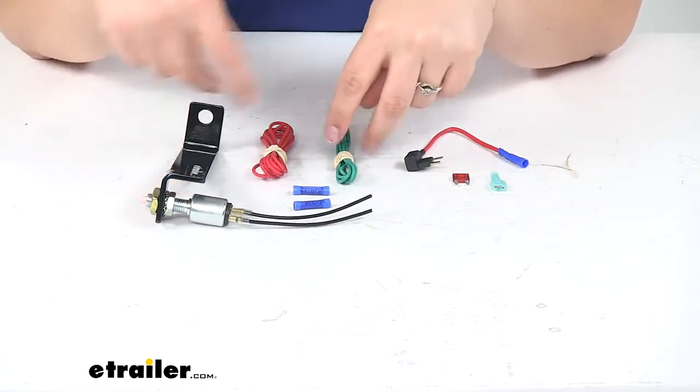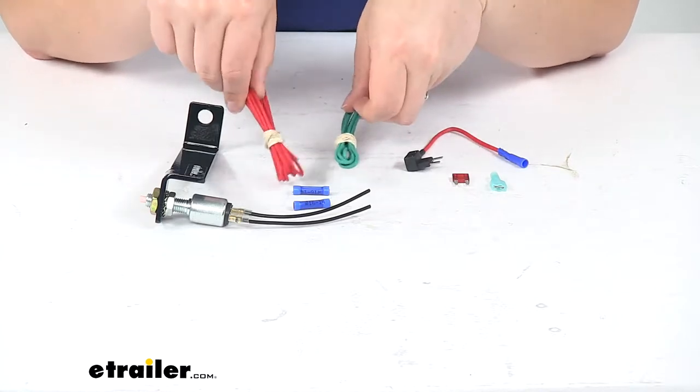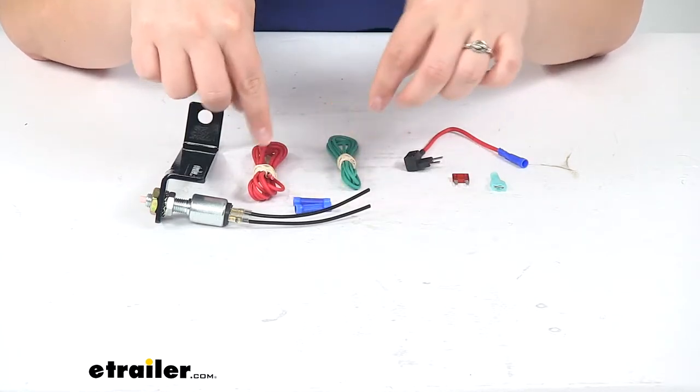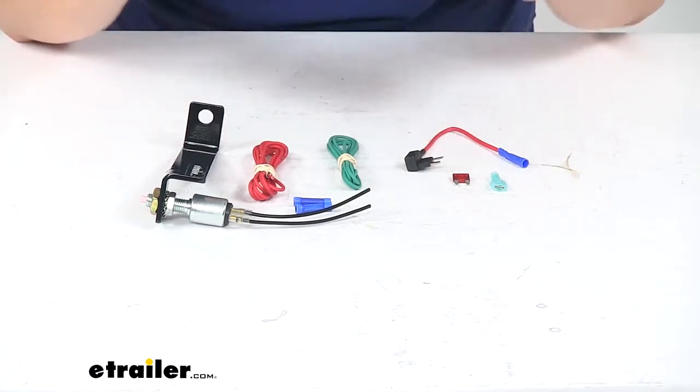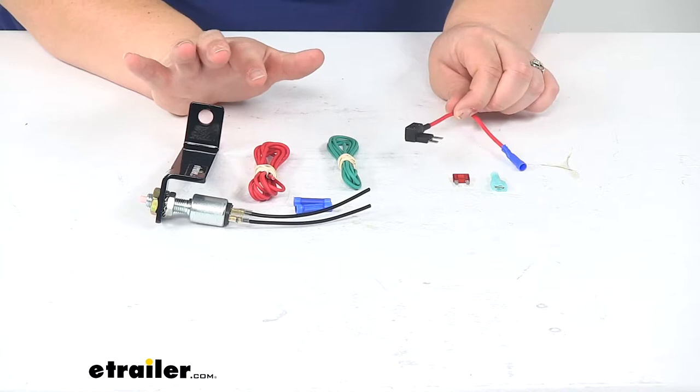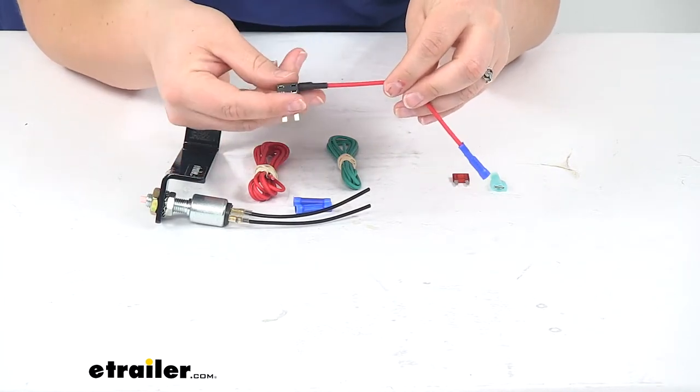Typically, your red wire will go to your power source—your battery, or maybe to the battery side of your battery disconnect, or to a fuse that's still powered whenever you have your vehicle in tow mode.